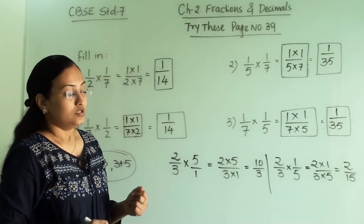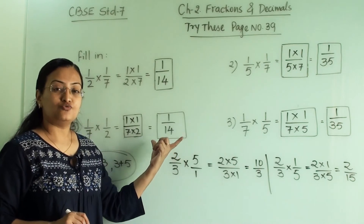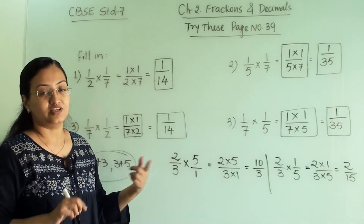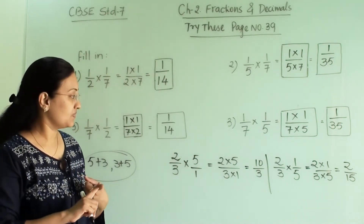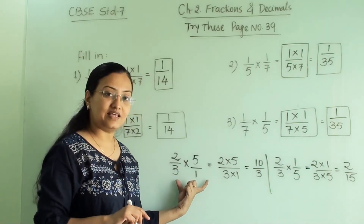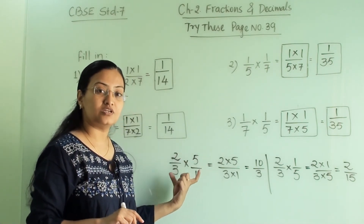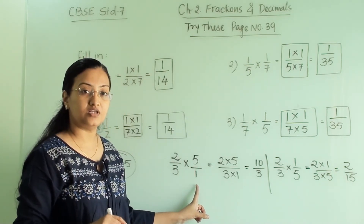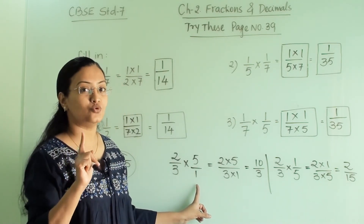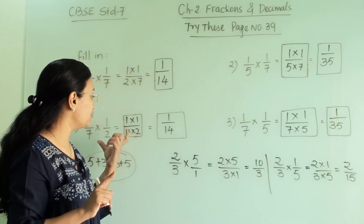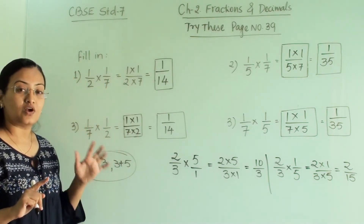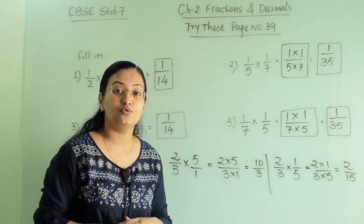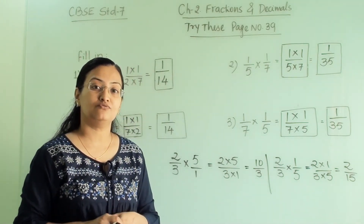These are the small things to take care of while doing multiplication. First, you can multiply numerator with numerator and denominator with denominator. Second, if nothing is in the denominator, you can assume 1. Third, even if you change the order, your answer remains the same. These are the three important points when doing multiplication of fractions.